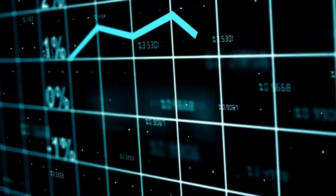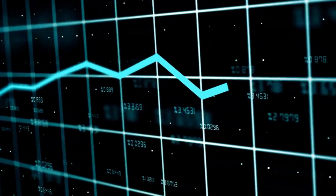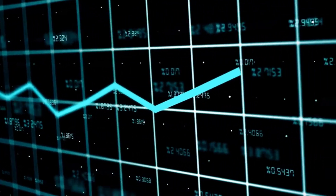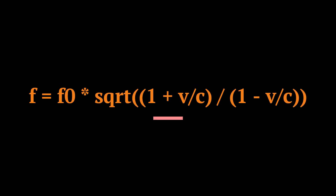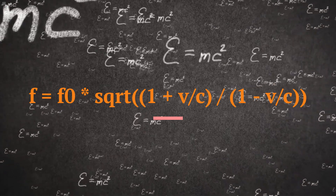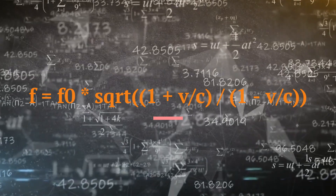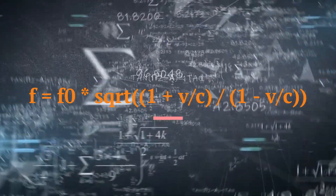These two effects work in opposite directions, but the second effect is stronger than the first. Therefore, the net result is that we will see an increase in the frequency of the light waves from the source, meaning that the light will be shifted towards the blue end of the spectrum. This is called a relativistic blueshift. The formula for calculating the relativistic blueshift is on the screen, where f is the observed frequency, f₀ is the emitted frequency, v is the speed of the source, and c is the speed of light.